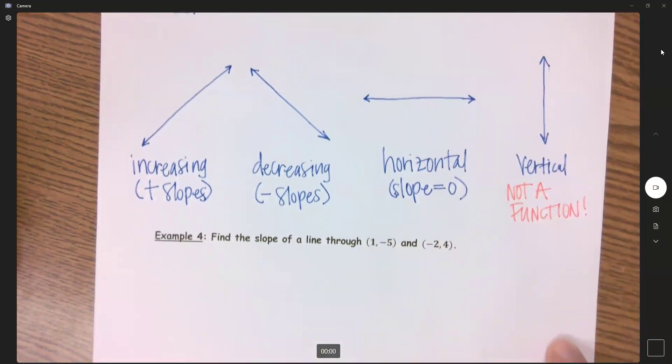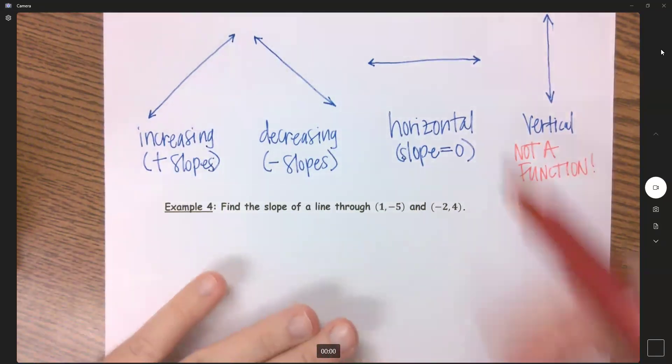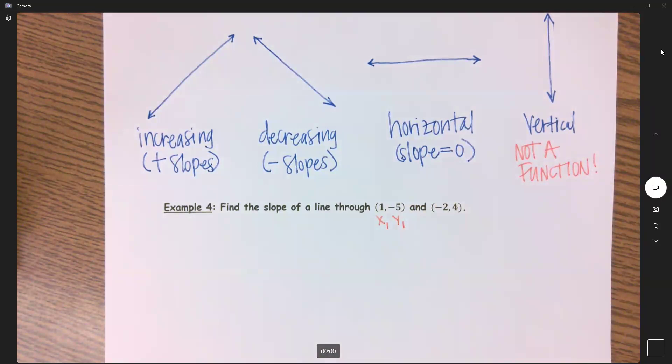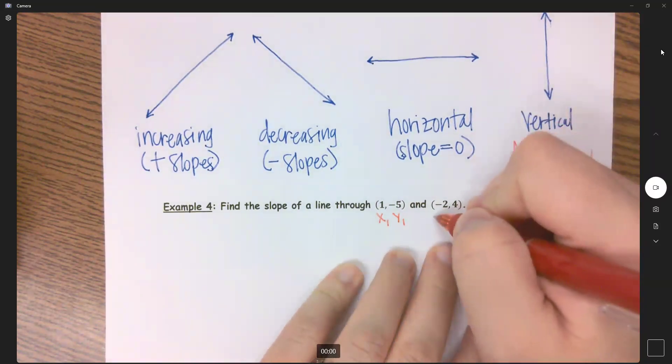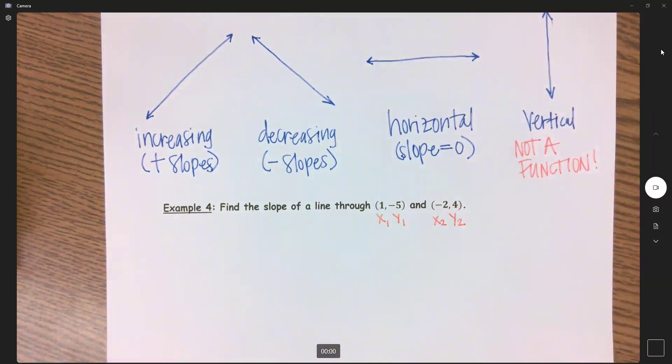We want to find the slope of a line that's passing through these two ordered pairs. So what I would do first is label your ordered pairs. Your first point here is your x1, y1, because ordered pairs are always in the form of x, y. So this is my first point. This is x1, y1. Then my second ordered pair would be x2, y2. Ones together, twos together, and it's always x, then y.